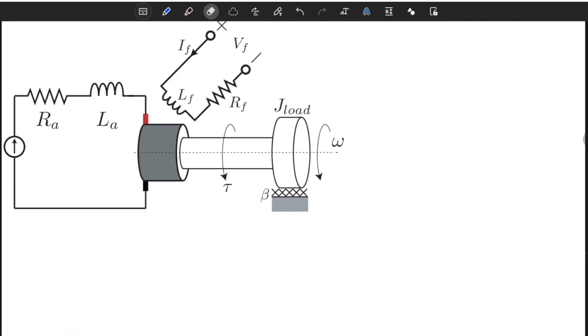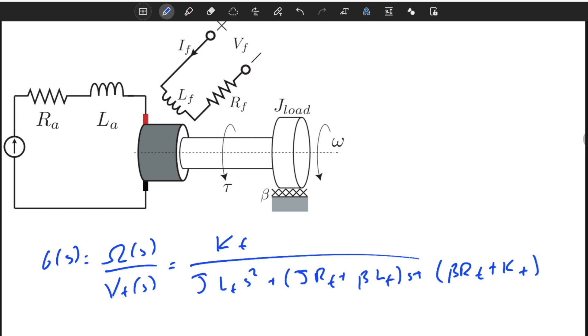The transfer function, which is equal to omega(s) divided by v_f(s), is simply equal to k_f divided by J times L_f s squared plus J times R_f plus beta*L_f times s plus beta*R_f plus k_f. As you can see, this is a second-order transfer function.